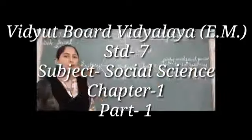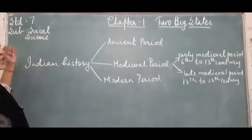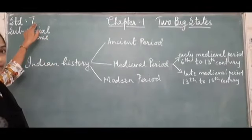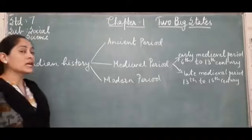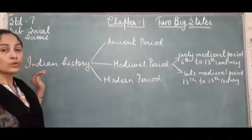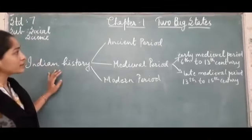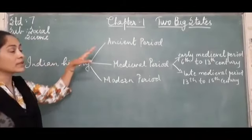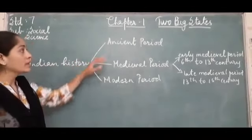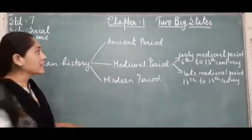Hello students, we are going to study social science of 7th standard. Before starting with the chapters, let us go through Indian history. Indian history basically can be divided into 3 parts: ancient period, medieval period, and modern period.